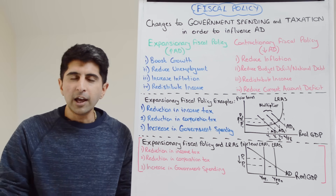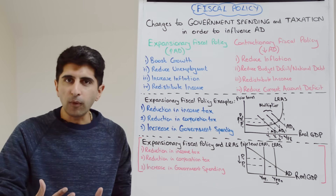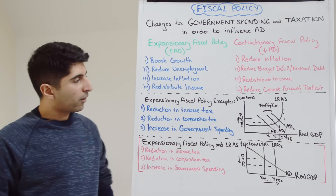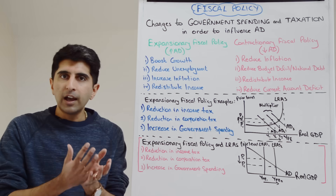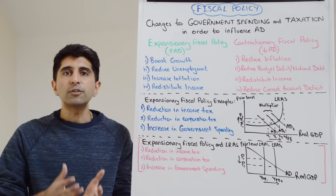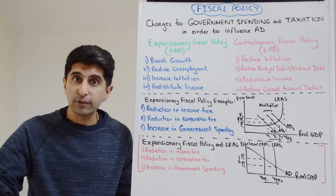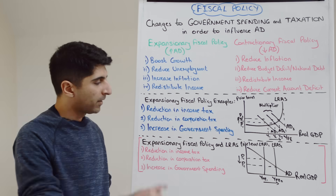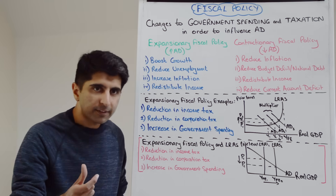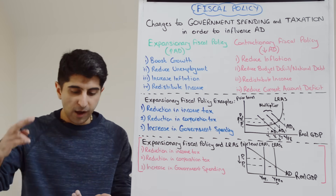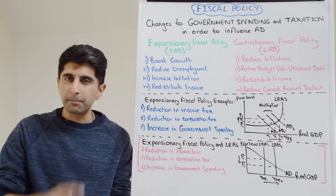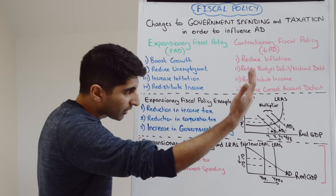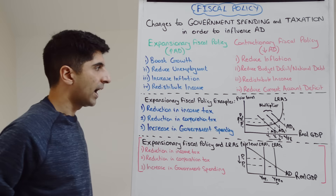Regressive taxes burden the poor more than they do the rich — they take a greater proportion of the income of the poor than of the rich. Therefore, if a regressive tax like VAT is cut, it could increase disposable income for the poor more than for the rich. And because the poor have a very high marginal propensity to consume, it could boost consumption in AD that way. On the government spending side of fiscal policy, government spending could rise on healthcare, education, infrastructure, or public sector wages — always be precise with the form of government spending — and that can boost G in the AD equation and therefore boost AD as well.